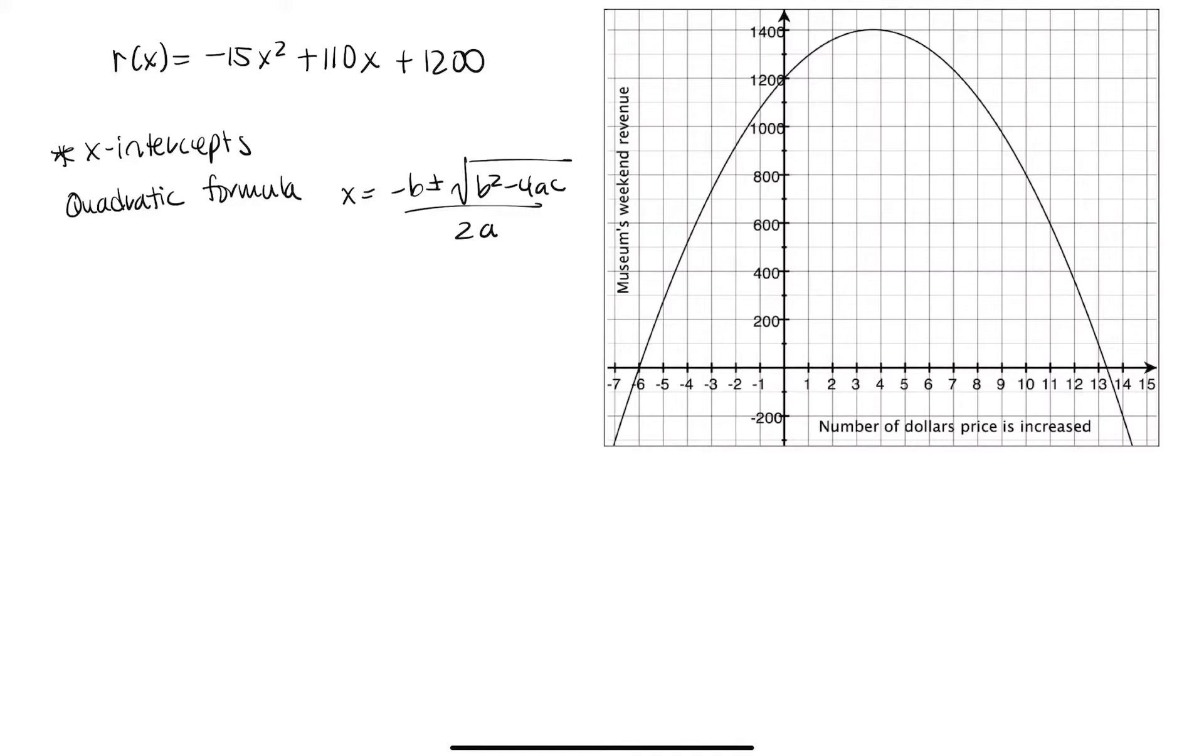Now, what are all these values, a, b, c? Well, let's rewrite r of x. Let's factor out a 5. All of these have a 5 in common, and that leaves us with negative 3x squared plus 22x plus 240.